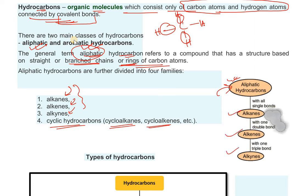Aliphatic hydrocarbons are classified by bond type. A single bond is called alkanes (C-A-N-E-S). A double bond is called alkenes (K-A-N-E-S). A triple bond is called alkynes.